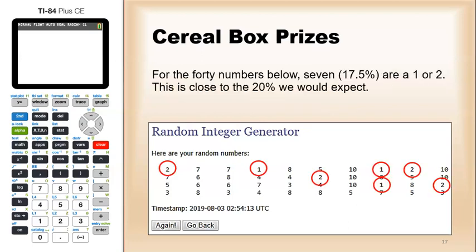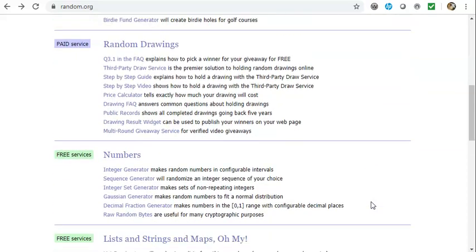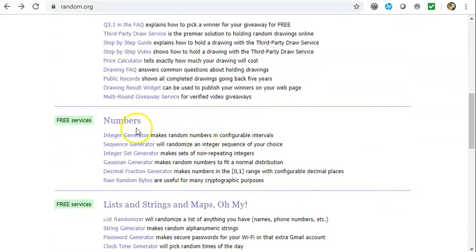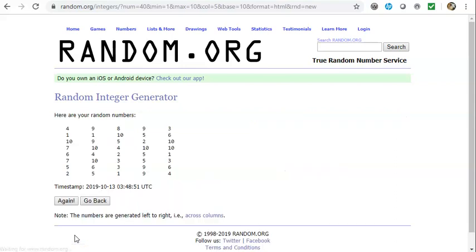We can go to a place like random.org. If you scroll down, say integer generator, we can tell them that we want to generate, let's say 40 numbers between one and 10. And then there's our numbers. From there, we can count how many times do we get a one or a two divided by the total number, by the 40 in this case.